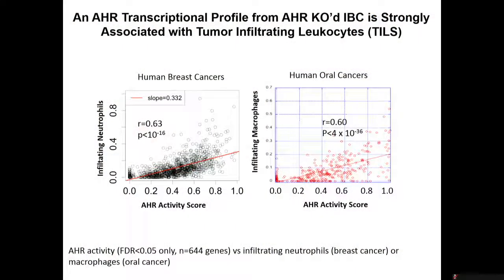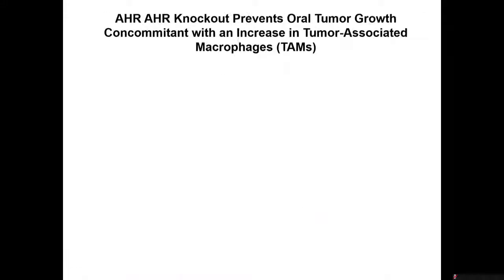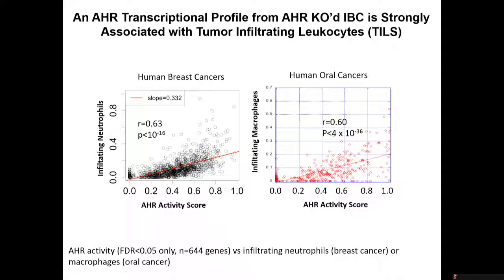The correlation between the 644 genes that change in human breast cancer cells and infiltrating neutrophils is very, very significant. That's not trivial because those neutrophils are generally known as myeloid-derived suppressor cells — if you see a lot of neutrophils in this model, they're likely suppressive. And if you go to human oral cancer cells, you see a strong correlation between AHR activity — the AHR profile — and infiltrating macrophages. In that system, that's really important because a lot of the infiltrating cells are immunosuppressive macrophages. That gave us confidence to go ahead and do the $15,000 experiment — going in vivo. It's a whole lot better to do the bioinformatics first to see if it's real, and then go back to the model.